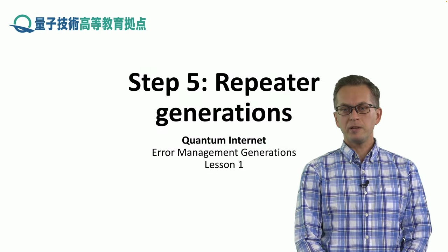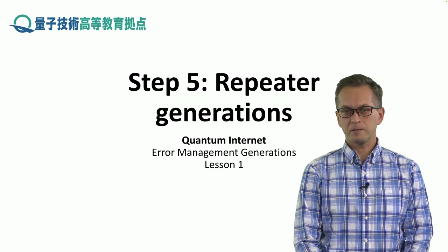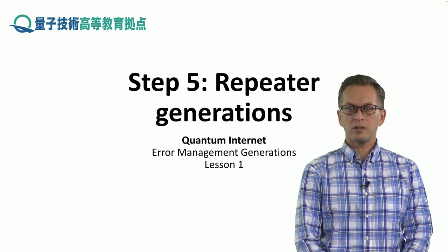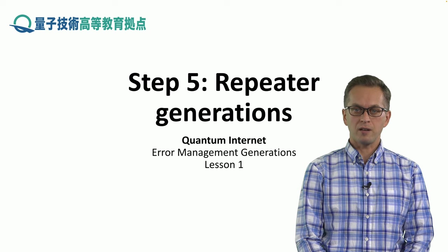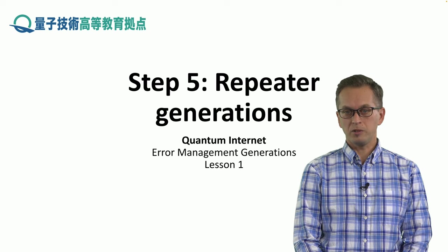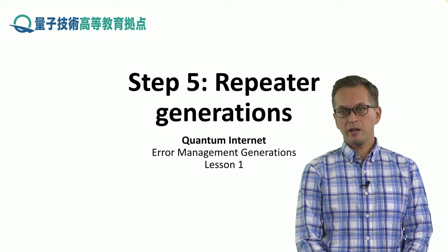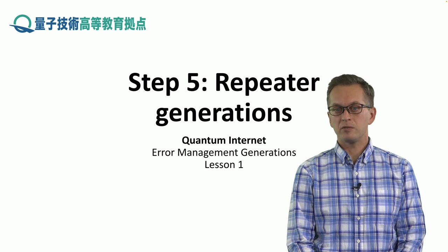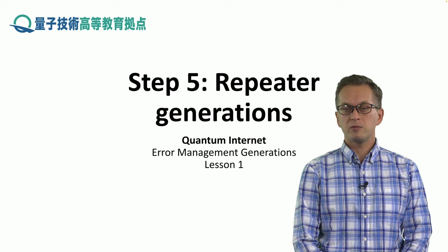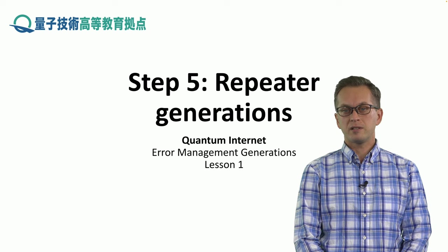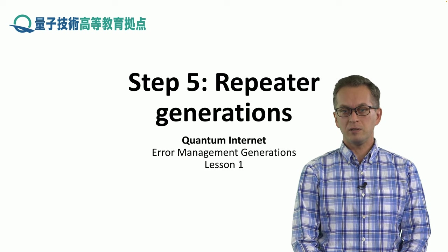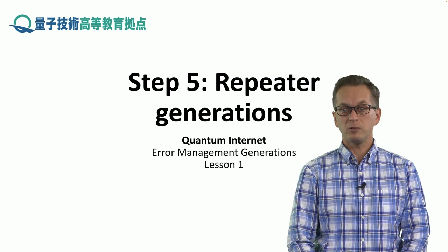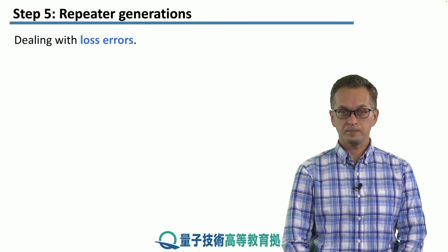Step 5: Repeater generations. So we have seen what the types of errors are that occur in quantum networks, and we have seen how to characterize an unknown state, but we still have not discussed how to deal with these errors. That's what we're going to do in this step.